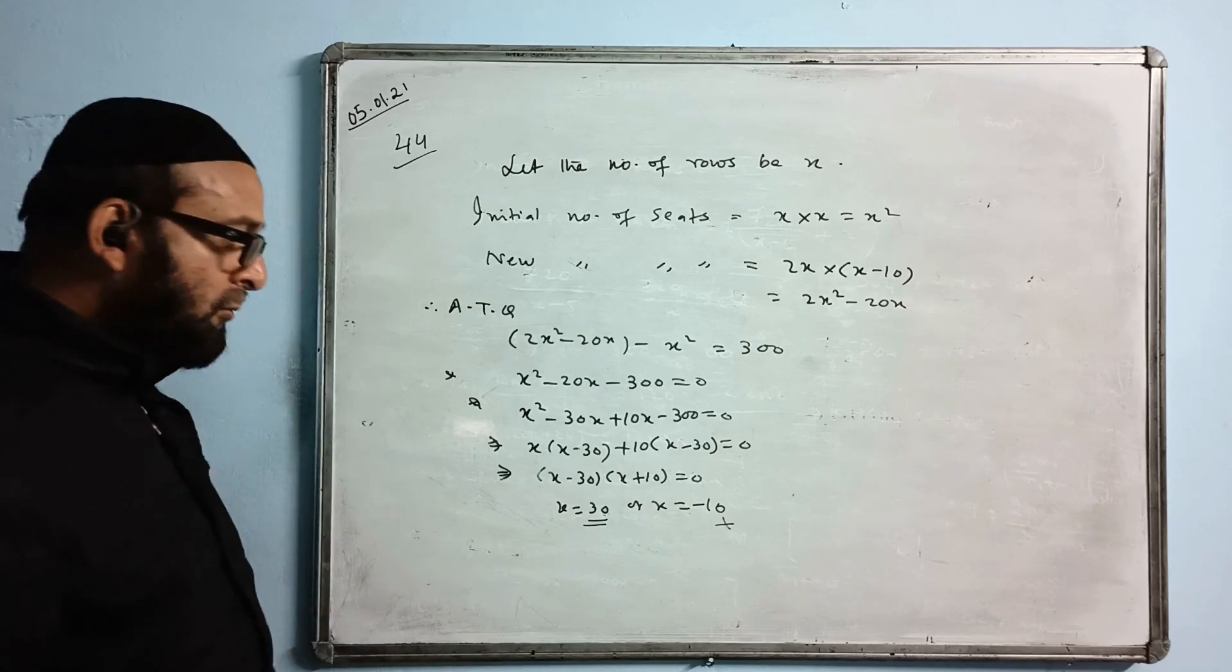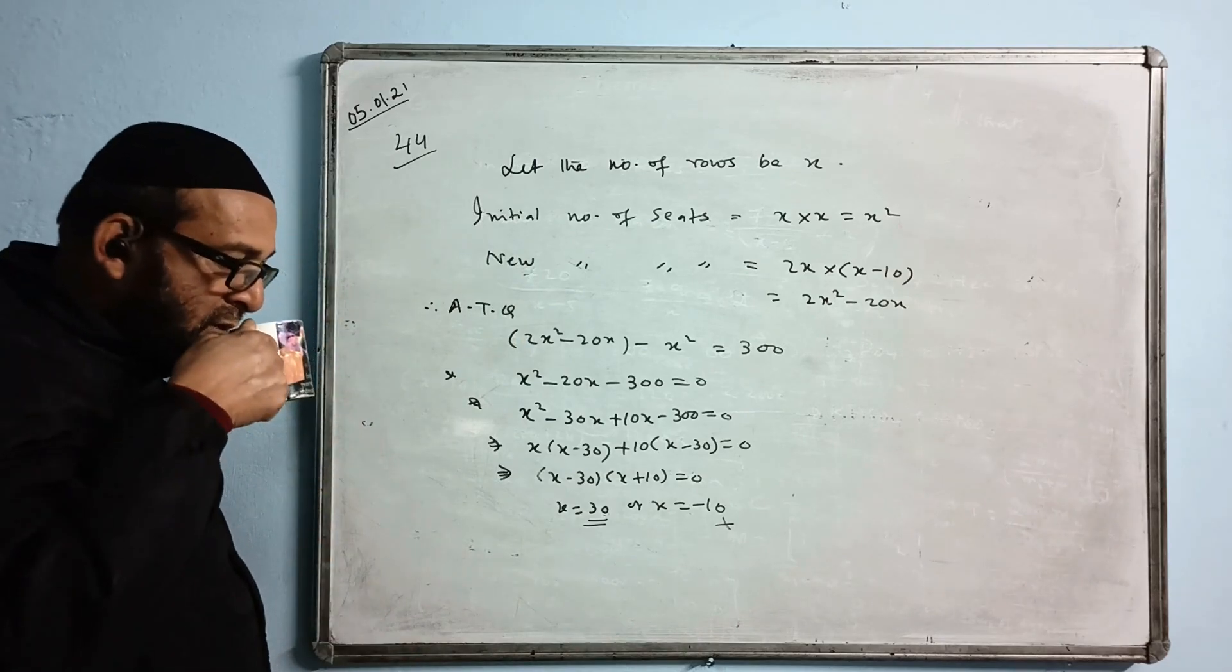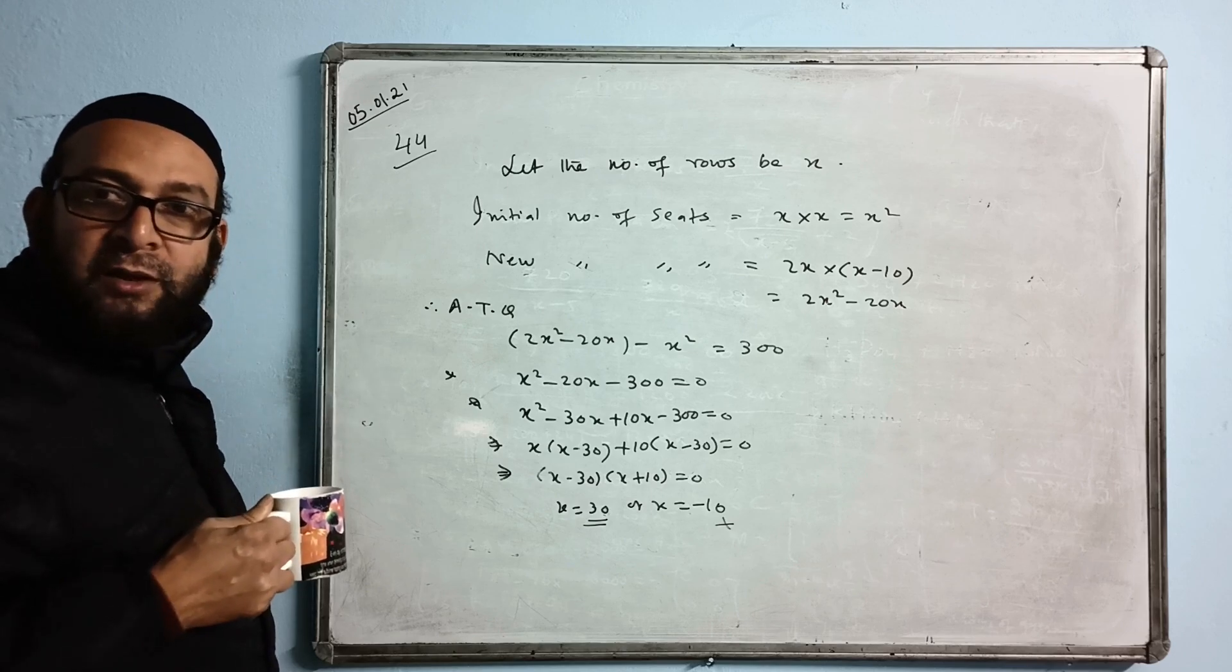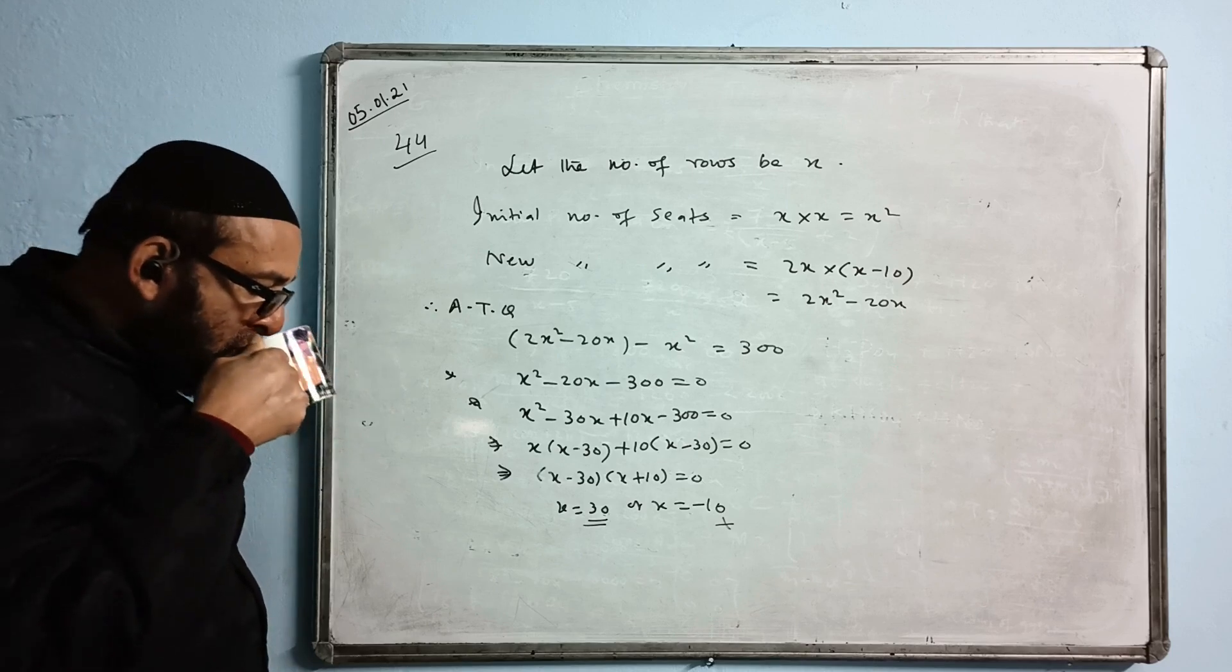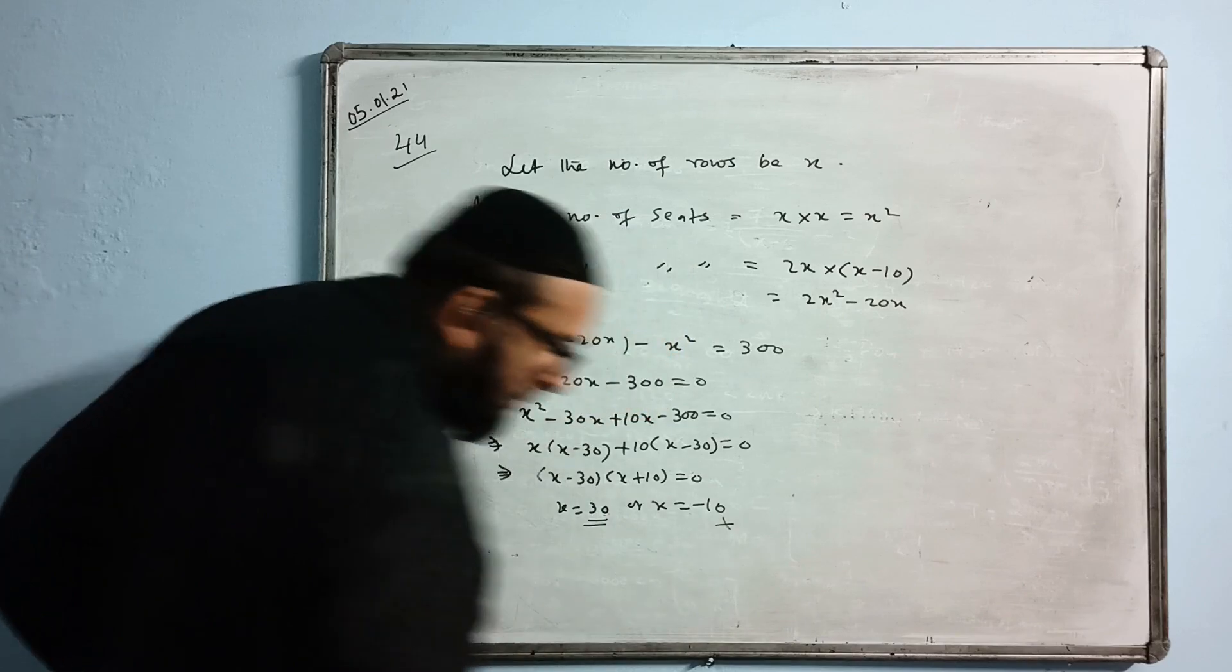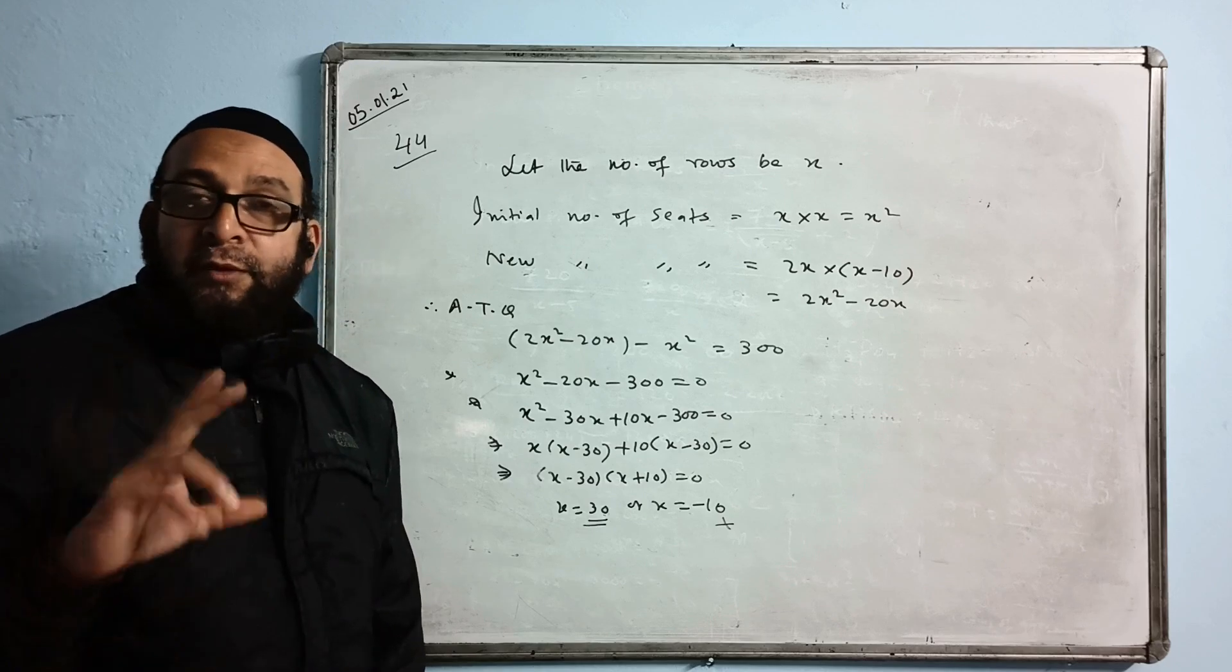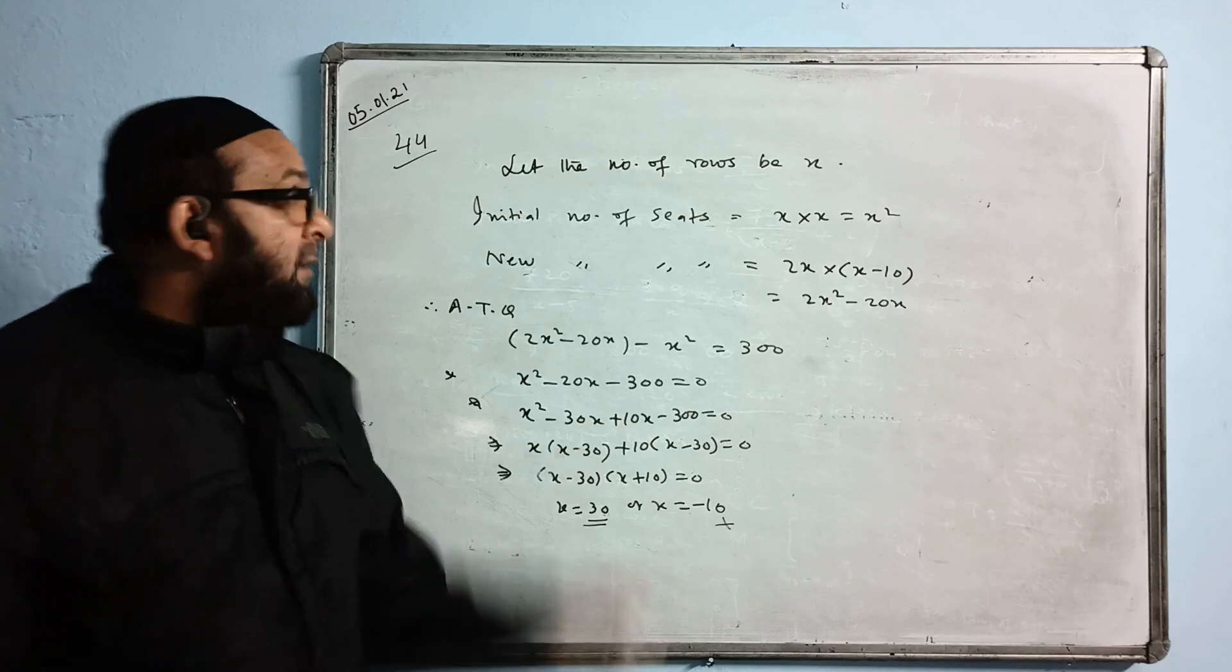Yes. Okay, ask me something else. Ask me or we start with you? Number 23, I will just give the hint. You will do it yourself. Hotel bill for a number of people was to be 4800. Let the number of people be X. Initial bill per head will be how much? 4800 divided by X.